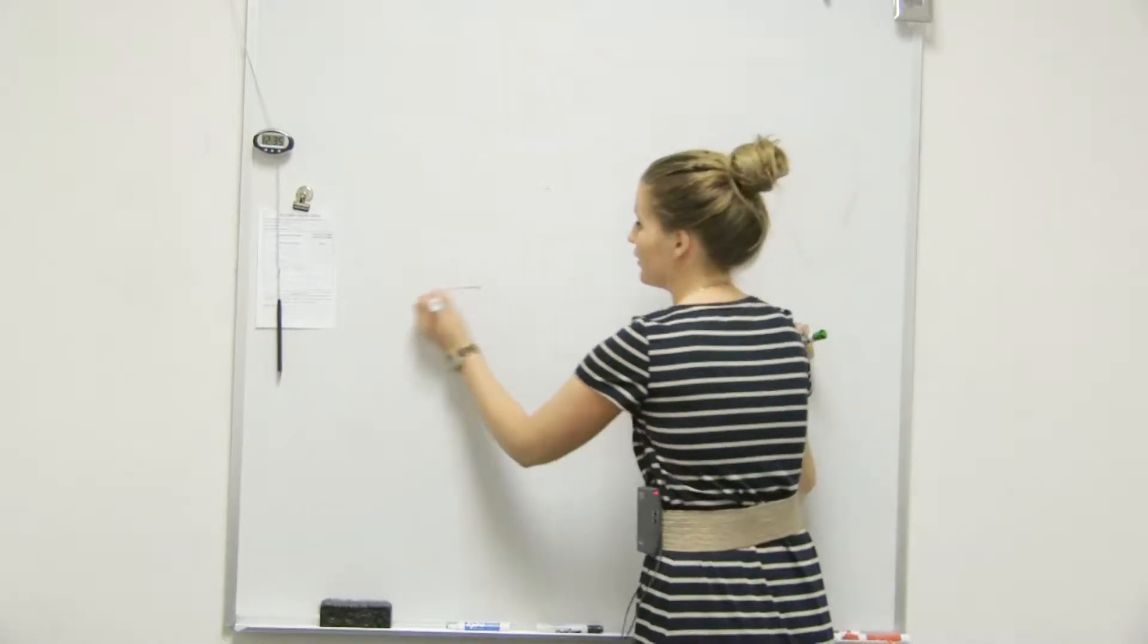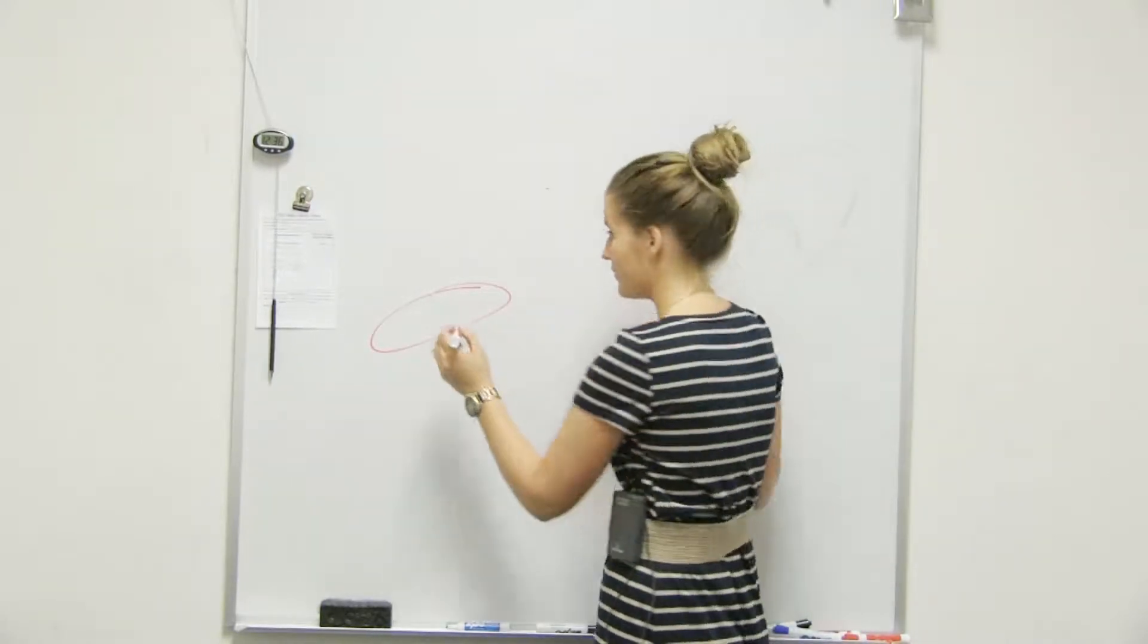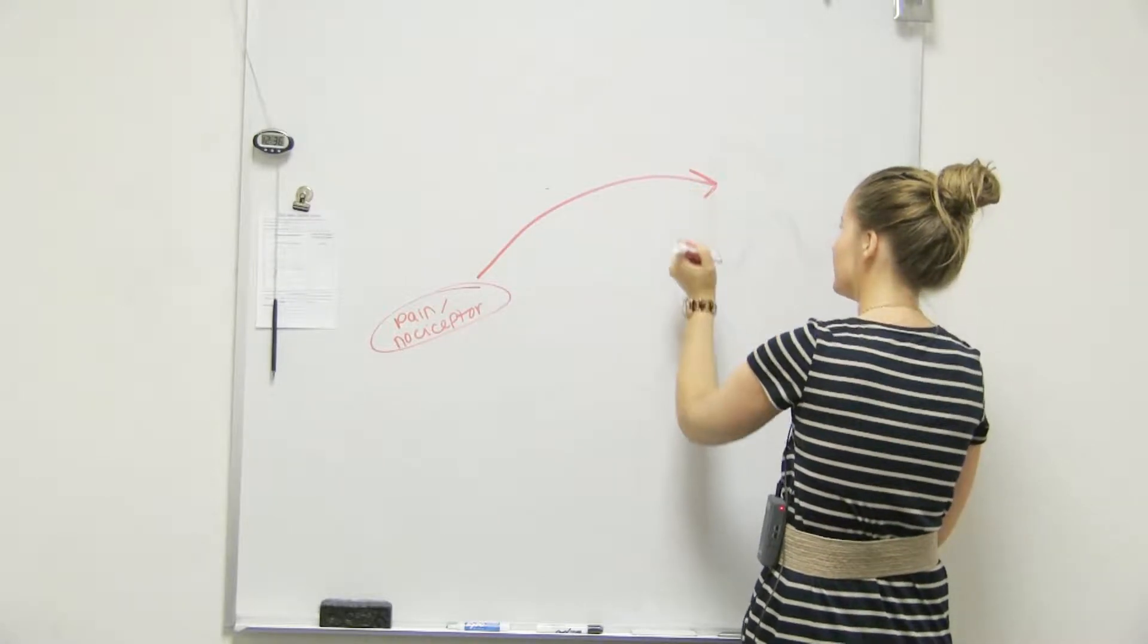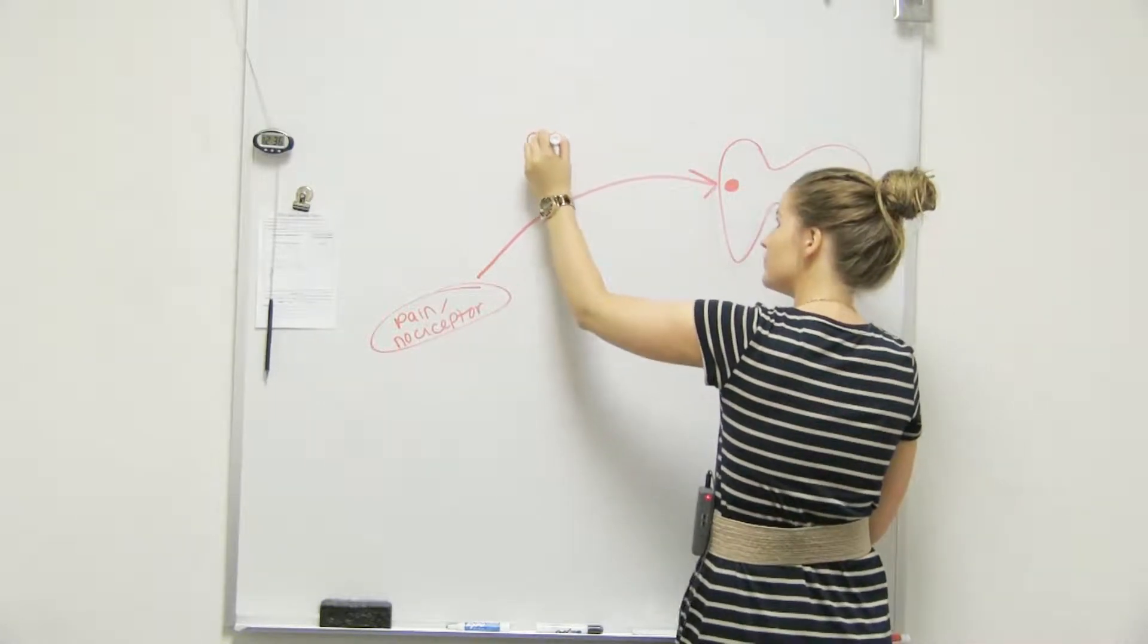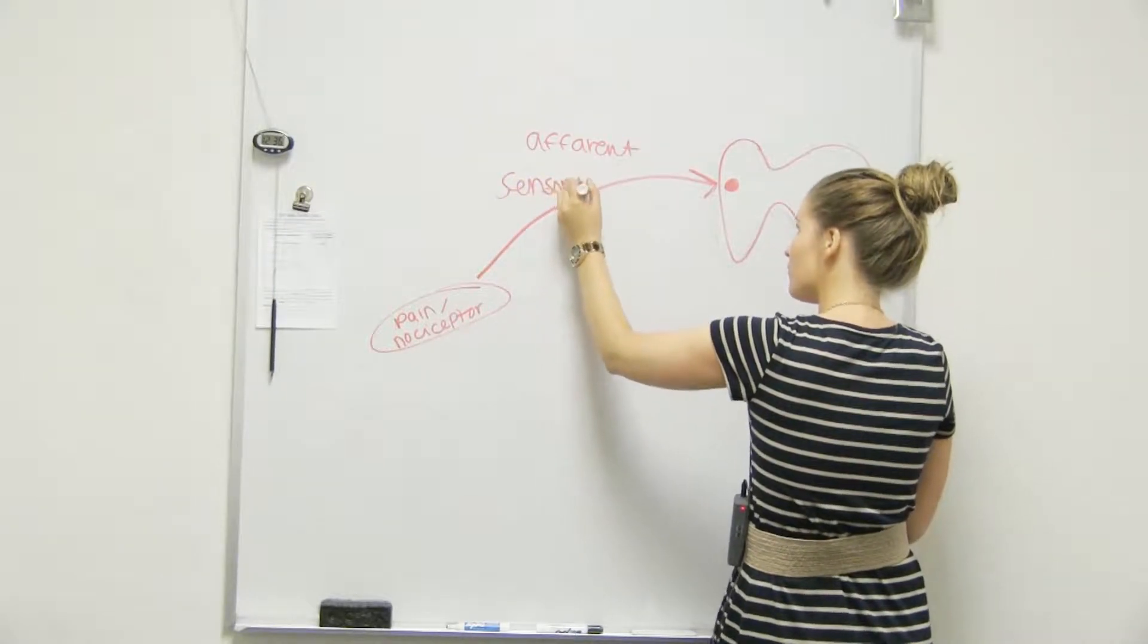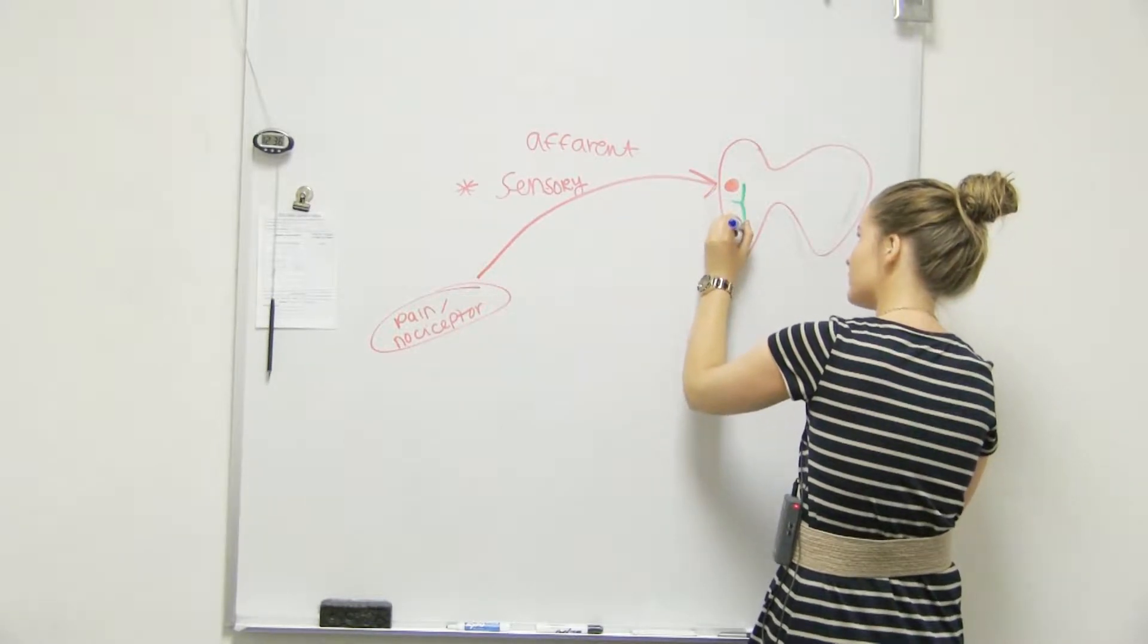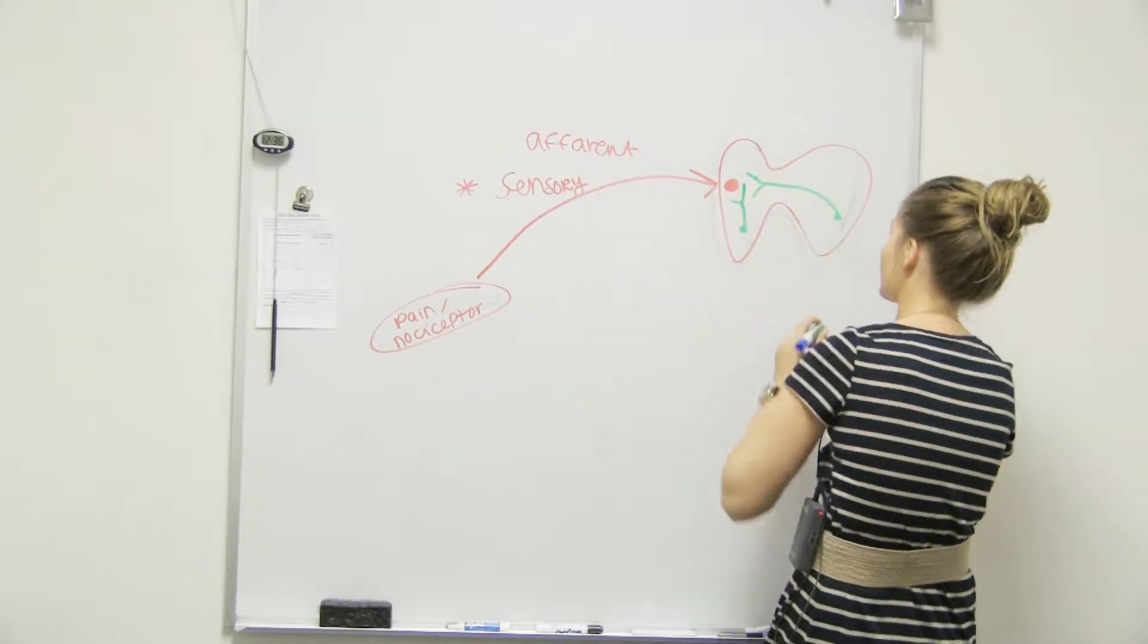You ready? What's my receptor? This is the withdrawal reflex - it's responding to pain. So pain or nociceptor. We're going to have what type of neuron? Yeah, that's right. Now, I'm going to run, yes, two.